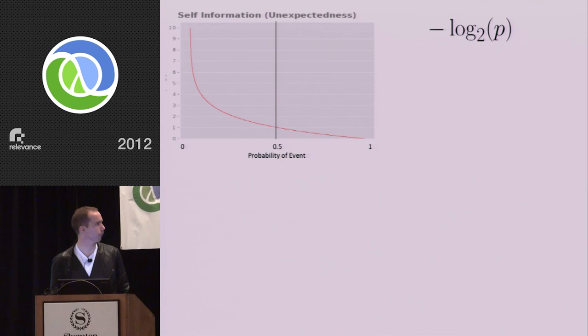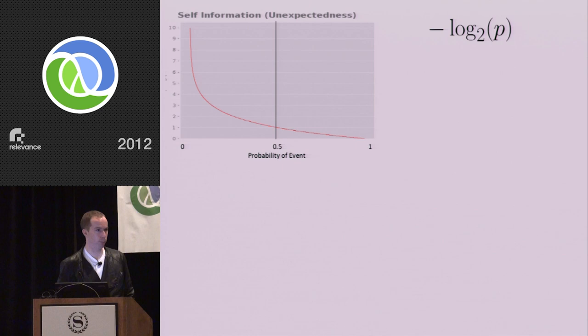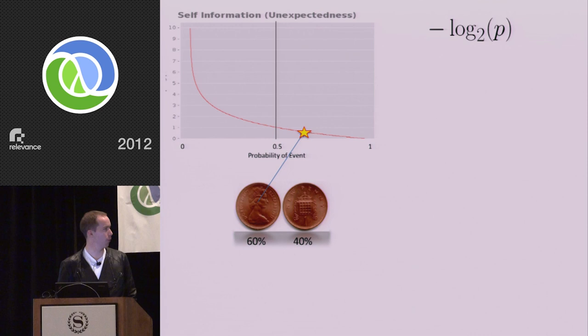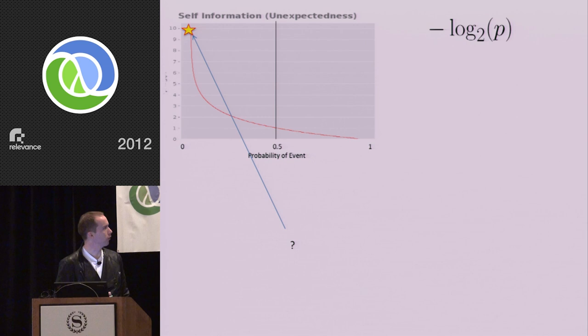To get a mathematical handle on that, we have to talk about unexpectedness. The fancy pants word is self-information. But all it is, if you have an event which has a particular probability p, minus log2 of p gives you the unexpectedness of that event. If you have an event which has got a probability of 1, it's totally not unexpected. So there's an unexpectedness of 0. If I flip my coin and it comes up heads, there's a probability of 0.6. It's not really unexpected. 40%, slightly more unexpected. If I flip the coin and it quantum tunnels through the floor in front of my feet, well, that's kind of unexpected. It can happen, but it's got a very high unexpectedness.